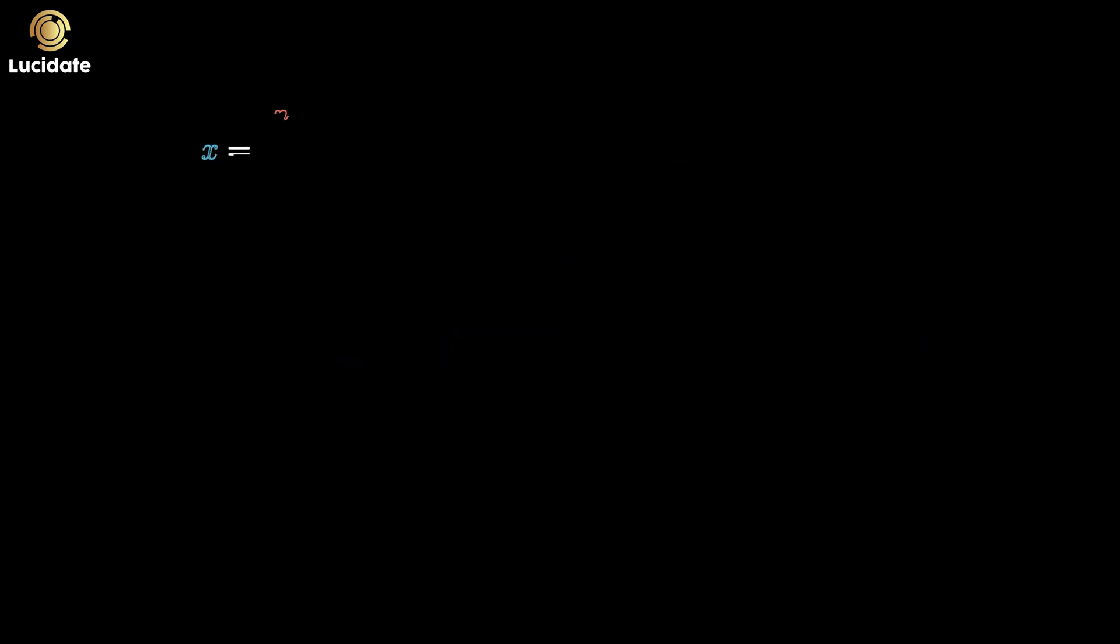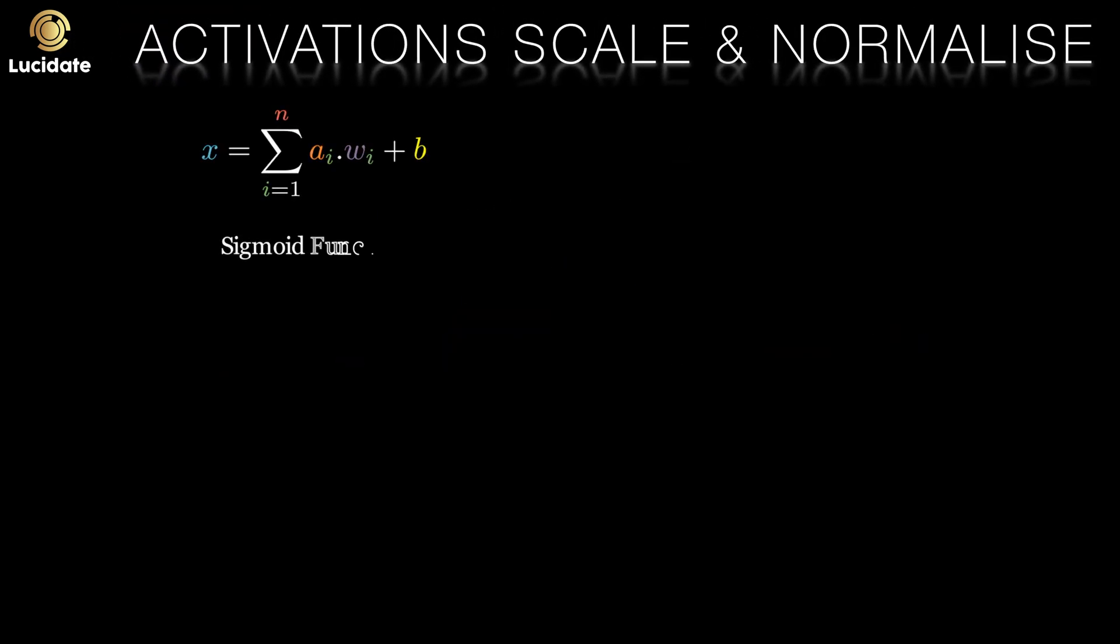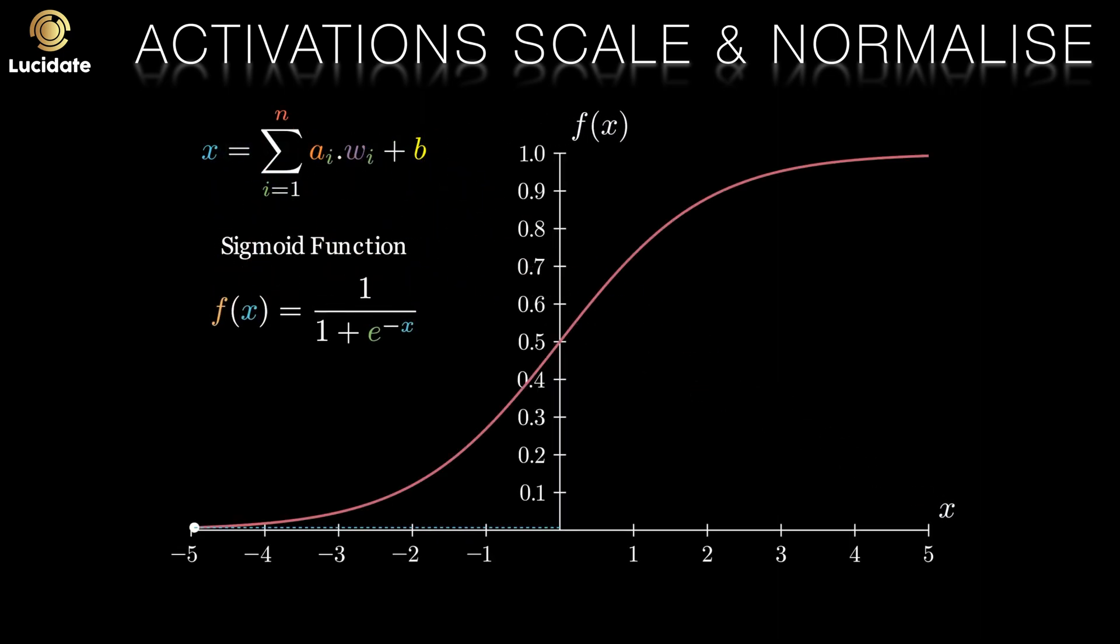Activations serve to scale and normalize the outputs. As you'll see, all of the activation functions here are non-linear, i.e. they are not straight lines. This is vital in allowing the network to learn complex non-linear relationships in problems that it is trying to solve.